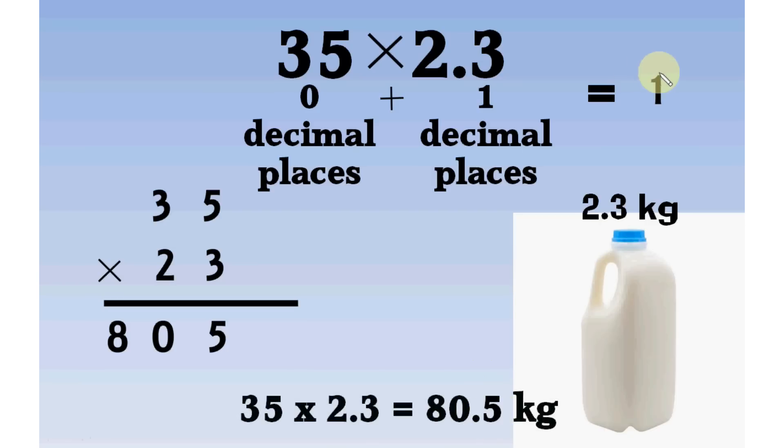It is the number of decimal places in the final answer. So, there would be 1 decimal place in the final product. Means only 1 digit after decimal point. So, we put decimal point here. The final answer would be 80.5. 1 digit after decimal point.